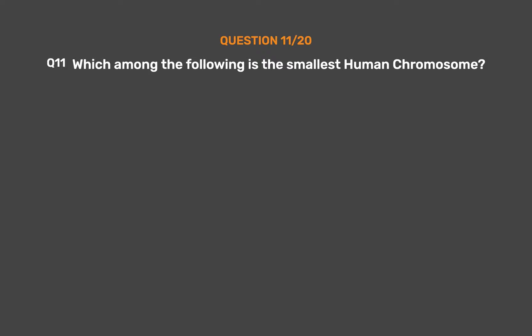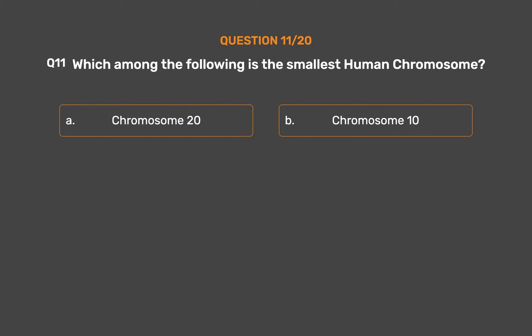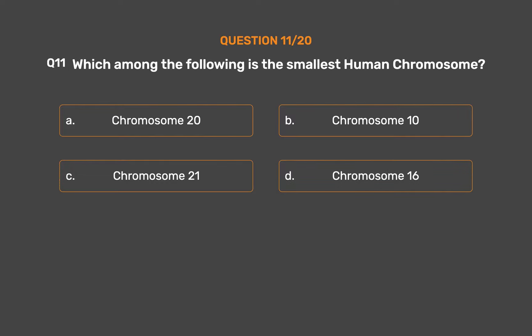Question No. 11. Which among the following is the smallest human chromosome? Option A: Chromosome 20. Option B: Chromosome 10. Option C: Chromosome 21. Option D: Chromosome 16. The correct answer is Option C: Chromosome 21.